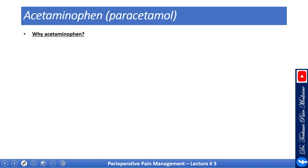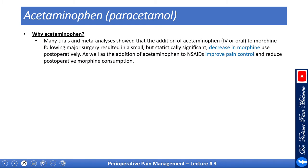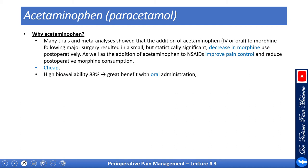Let's talk about acetaminophen, also known as paracetamol or Tylenol in the US. There are plenty of good meta-analysis data showing statistically and clinically significant reduction in opioid consumption and improved pain control. It is effective, cheap, and has high bioavailability of almost 90%, making it excellent for oral administration. The safety profile is very good — it is devoid of many side effects generally associated with NSAIDs and opioids.